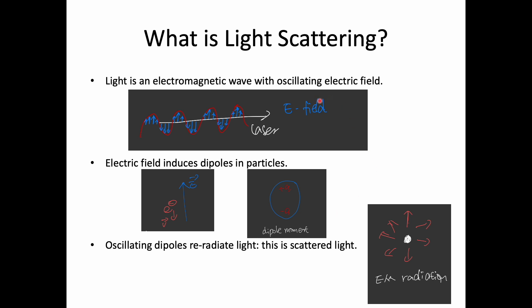The electric field in the EM wave is oscillating, meaning the direction as well as the strength of the E field is changing all the time. This oscillation in turn causes the dipole moment to oscillate as well. An oscillating dipole moment can re-radiate light in different directions, and this is the scattered light.